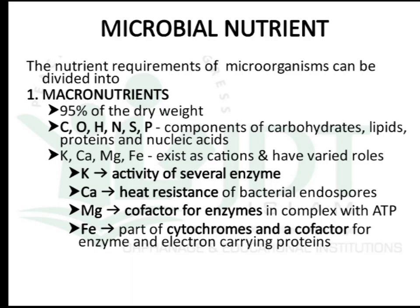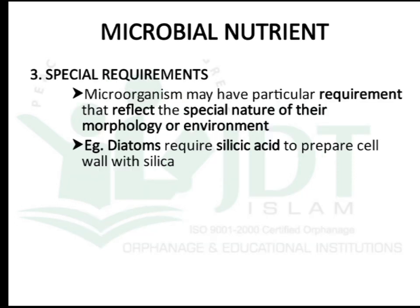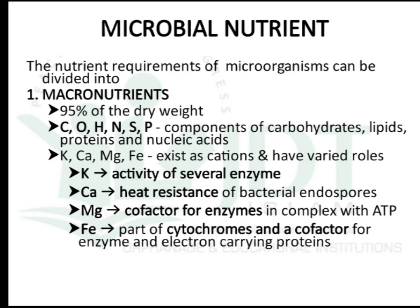Microbial nutrients are classified into three groups: macronutrients, micronutrients, and special requirements. Macronutrients encompass 95% of the dry weight of bacteria. Atoms like carbon, oxygen, hydrogen, nitrogen, sulfur, and phosphate are components of carbohydrates, lipids, proteins, and nucleic acids. Other atoms like calcium, potassium, magnesium, and iron exist as cations with varied roles: potassium for enzyme activity, calcium for heat resistance in endospores, magnesium as a cofactor for enzymes and in complex with ATP, and iron as part of cytochrome and electron-carrying proteins.